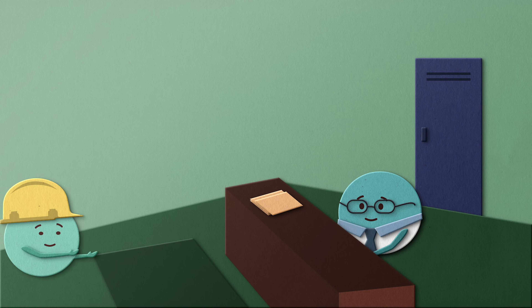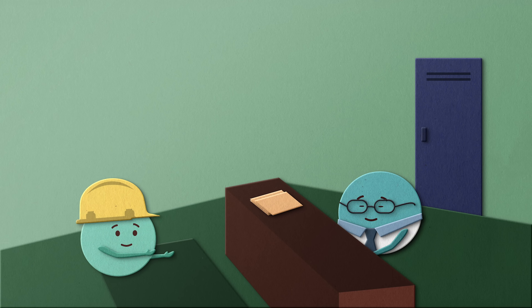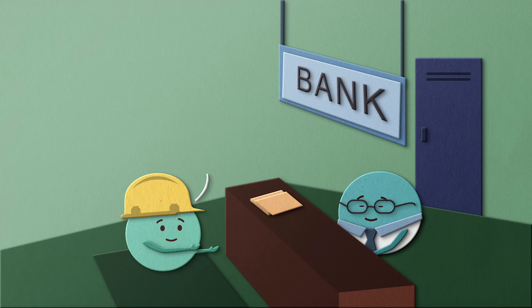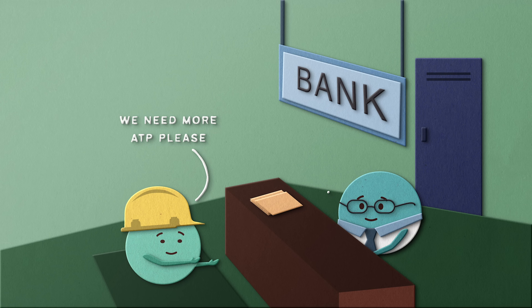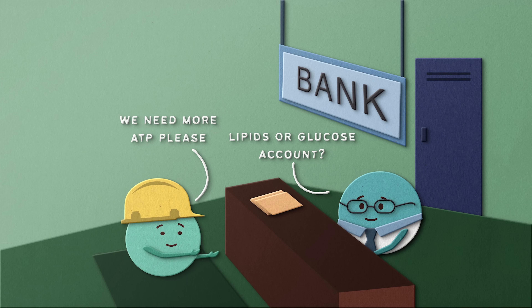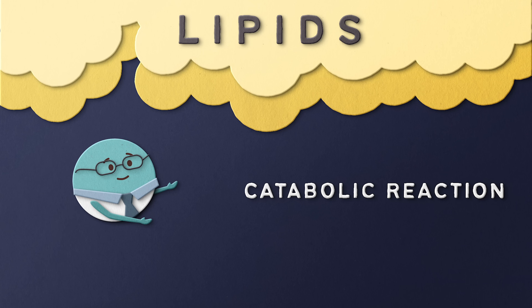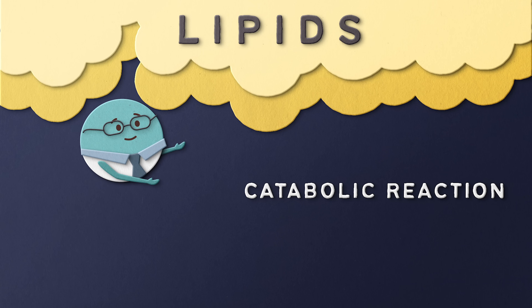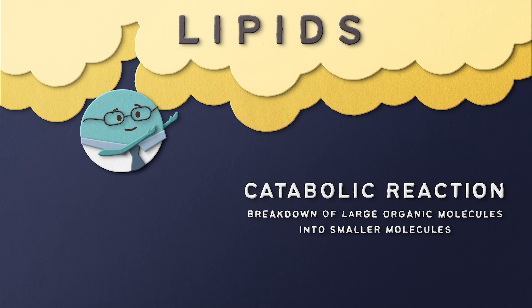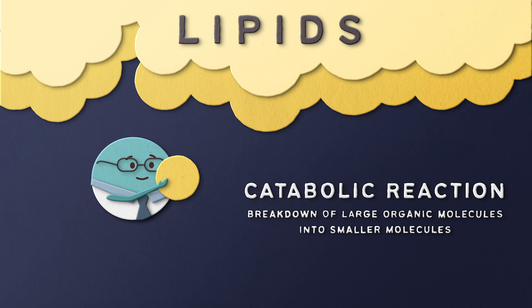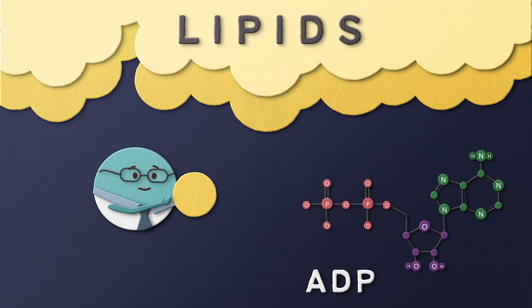To make more ATP, your cell goes back to the energy bank — those large molecules like glucose and fats. Through catabolic reactions, which break down these large molecules, energy is harvested to reattach a phosphate to ADP, turning it back to ATP.